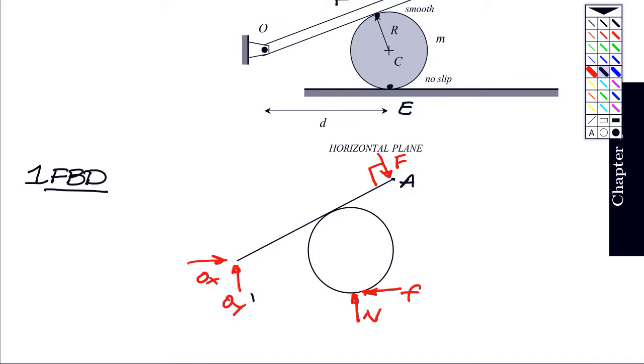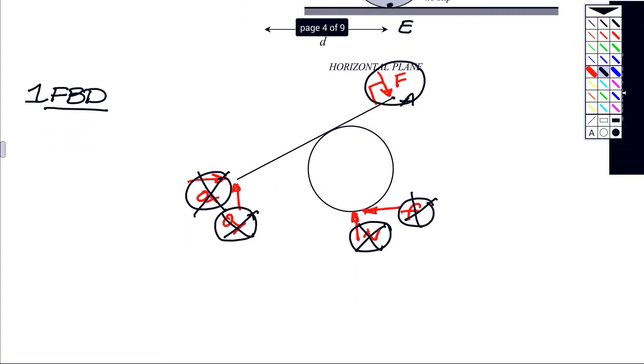Going through the forces one by one, we can strike out OX and OY because they do not do work. They act at a fixed point. Same way for F and N. They do not do work because they act at a no-slip point. The only force that we need to deal with is going to be the applied force F whenever we do our work calculations.